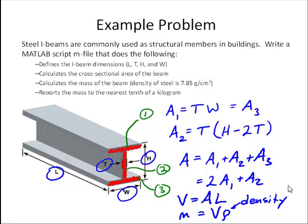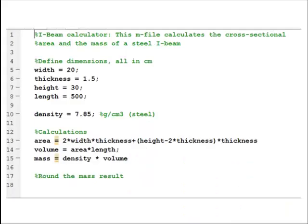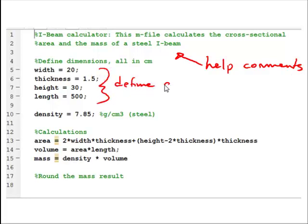So let's look at a MATLAB script that does most of this calculation. So here's the script M file that I wrote. Up top you see we have the help comments to describe what the problem is doing. Here we define all the variables, our geometry with those variables, all in centimeters. And then here's our calculations down here. We calculate the area. Notice I'm using descriptive variable names instead of just the single letters. I'm using variable names width, thickness,